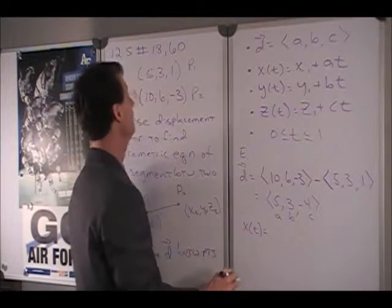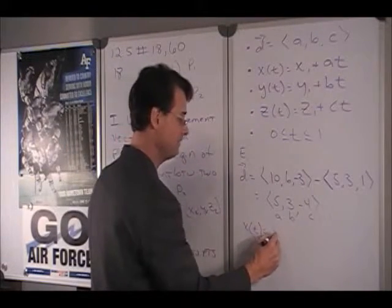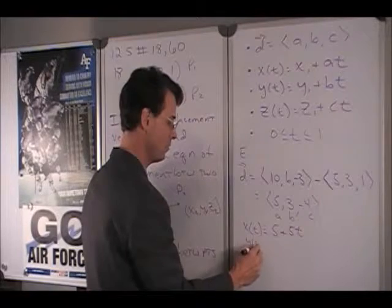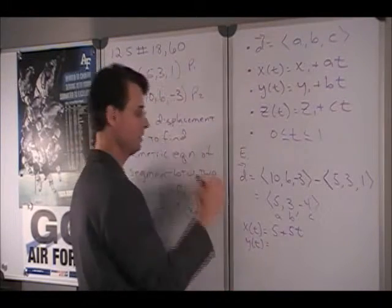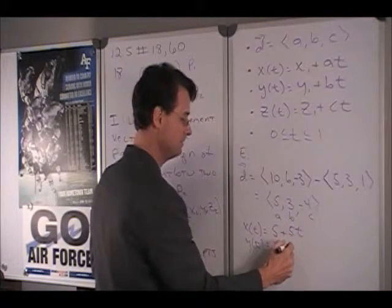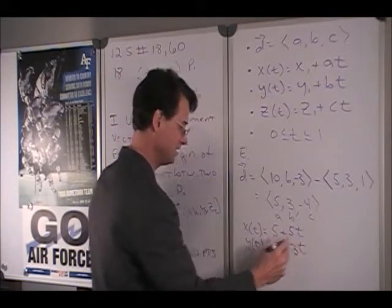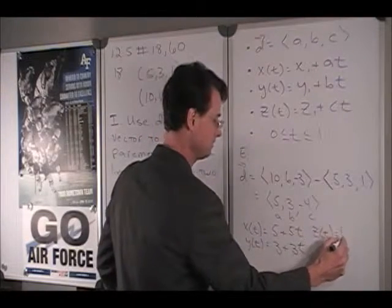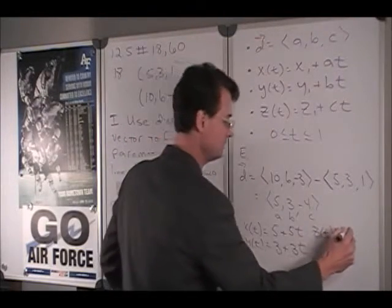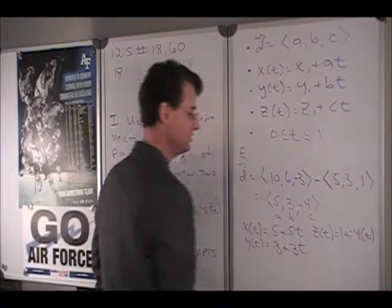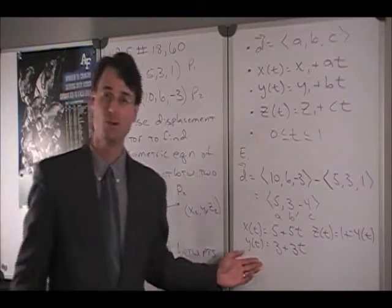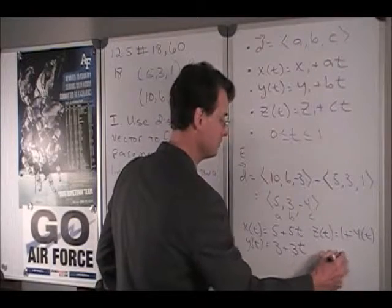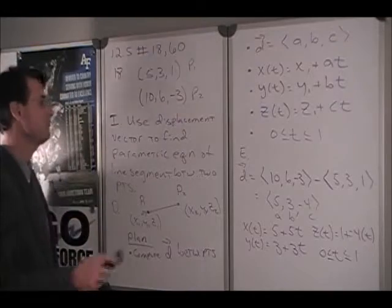X of T is going to be x1, which was 5, plus A, which is 5, times T. Y of T is going to be y1, which is 3, plus B, which is 3, times T. And then z of T is going to be z1, which is 1, plus C, which is negative 4, times T. So these are parametric equations for that line segment, and we need to note that T goes from 0 to 1.